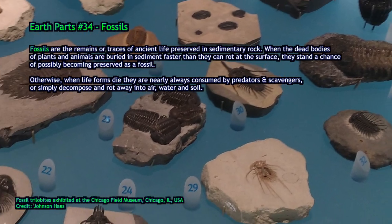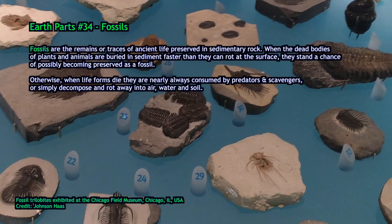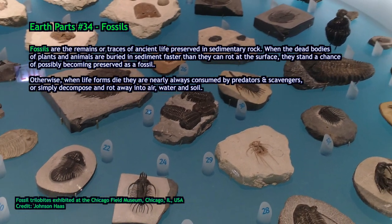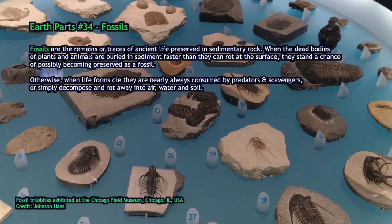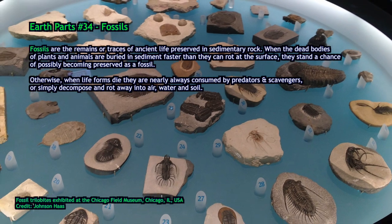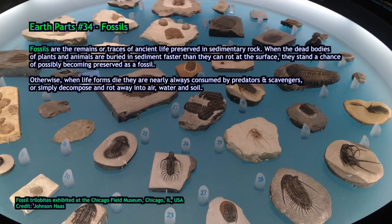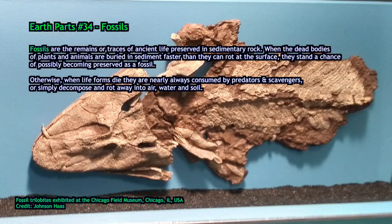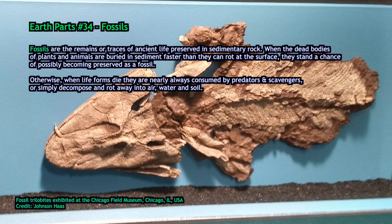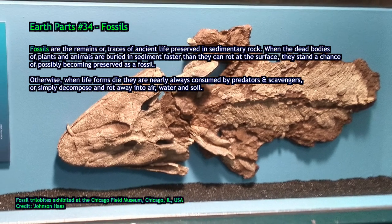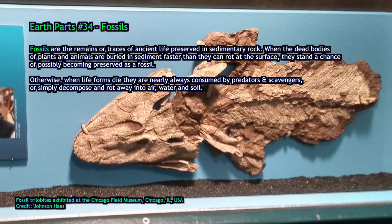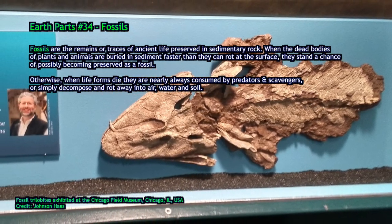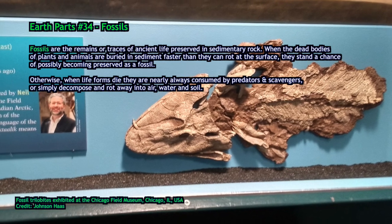A fossil is a trace of ancient life preserved in the rock record of sedimentary rock. A fossil differs from something that's just been dead a long time, in that it is geologically changed into a form that is less prone to rotting when it's exposed at the Earth's surface again. Although that's not a hard and fast rule, as we'll see.